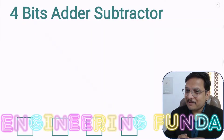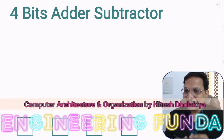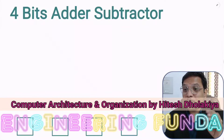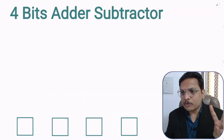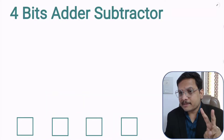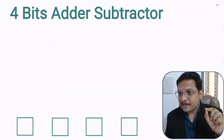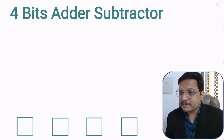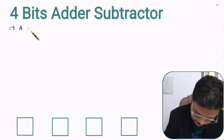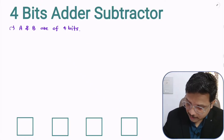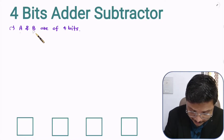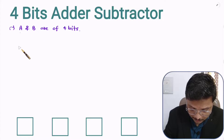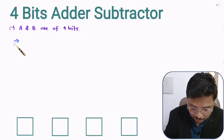Hello friends, welcome to engineering funda family. In this video I am going to explain you 4-bit adder subtractor circuit. What I will be doing is I will be considering 2 datas that is having size of 4 bits. Let us consider A and B that is having size of 4 bits. Now what I want is I want to add and subtract these 2 data. Let me show you how we will be performing it.